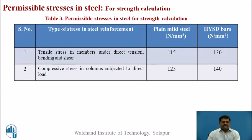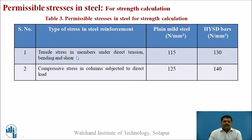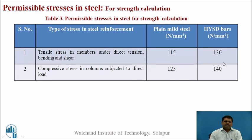For strength calculation, since RCC is a composite material, stresses are required for both materials. Two types of steel stresses are given — for plain mild steel and HYSD bars — covering tensile stress under direct tension, bending and shear, and compressive stress in columns under direct load. Today, high yield strength deformed (HYSD) bars are mostly used, and mild steel bars are not typically used in water tanks.